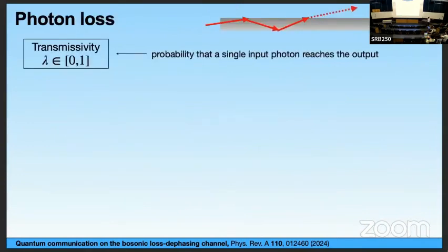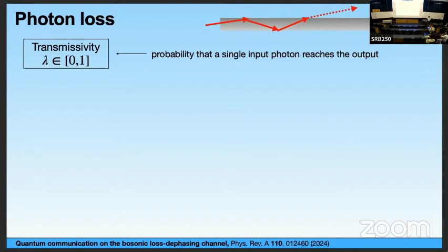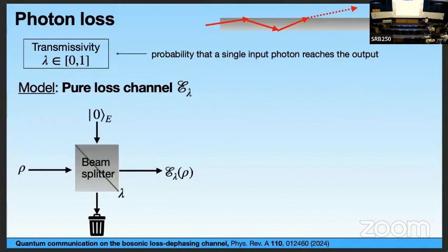Now let's talk about photon loss. Imagine you have an optical device, for example an optical fiber, and you input a single photon into it. This photon has some probability lambda to be transmitted to the output, and some probability one minus lambda to be lost in the environment. We call this probability the transmissivity — it is a parameter in zero to one. To model photon loss in optical systems, people use the pure loss channel, a continuous variable channel defined by mixing the input state in a beam splitter of transmissivity lambda with an environment initialized in the vacuum, then tracing out the environment.